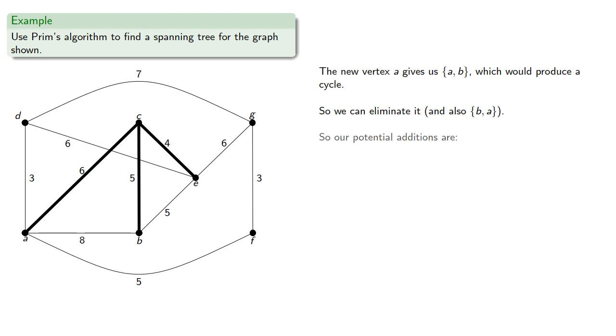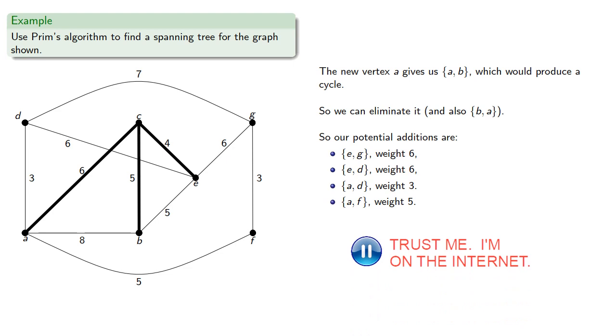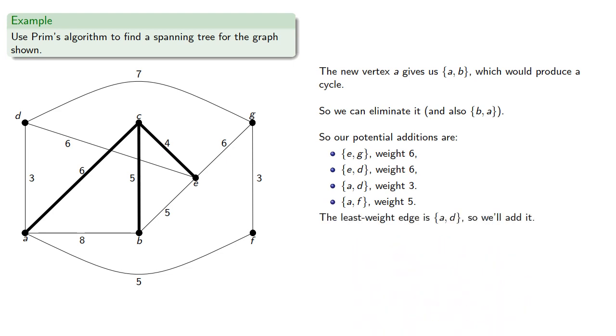So the potential additions at this point are the edges we could have added before, as well as the new edges AD and AF. And the least weight edge is AD, so we'll include it.